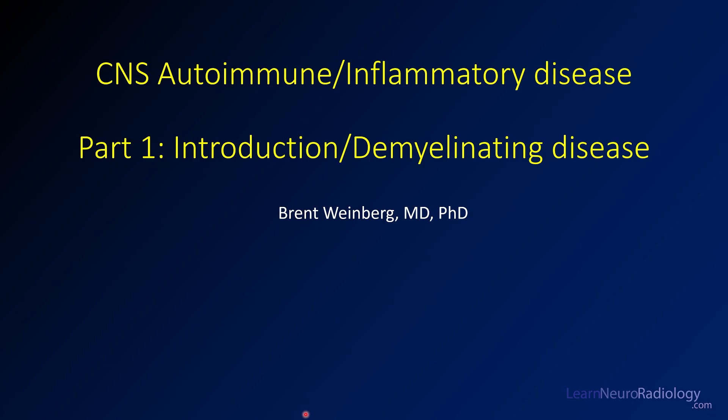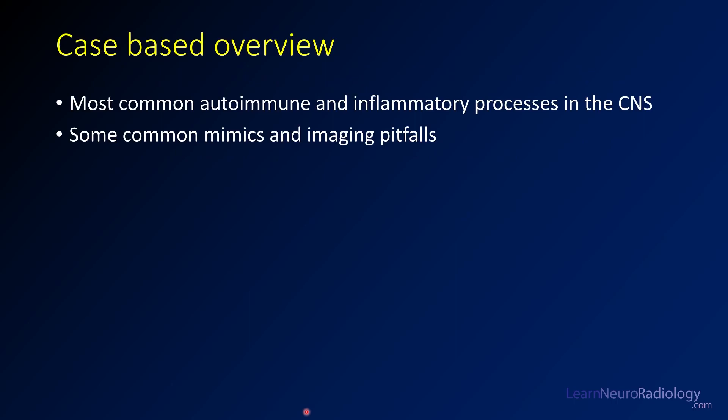We're going to cover demyelinating disease both in the brain and in the spine. This is a case-based overview covering many of the most common autoimmune and inflammatory processes you'll see on imaging in the CNS. We'll also talk about common mimics and imaging pitfalls — things that might mimic autoimmune and inflammatory disease, like infection, genetic conditions, and metabolic syndromes.